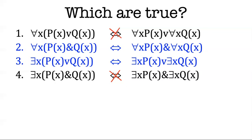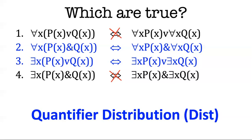So what we've learned here is that one of the quantifiers distributes over one of the Boolean connectives and not the other way around, not with the other ones.